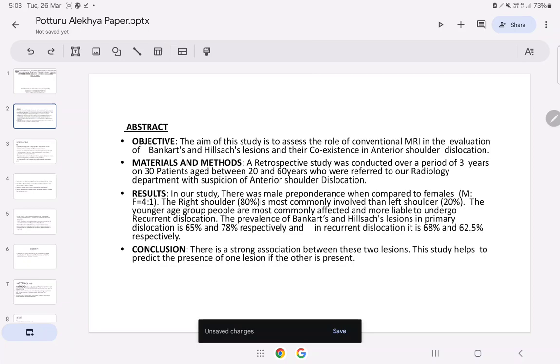Results: In our study, there was male preponderance, right shoulder was more commonly involved than left shoulder, younger age group people are most commonly affected and more liable to undergo recurrent dislocation.